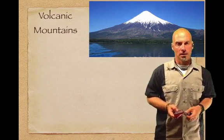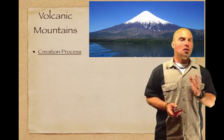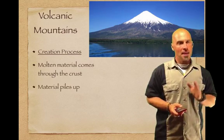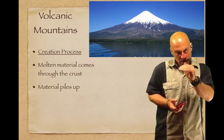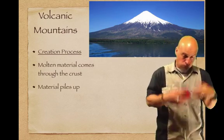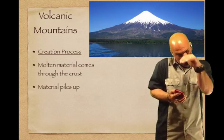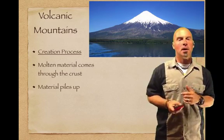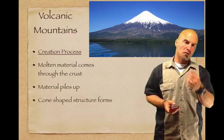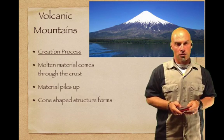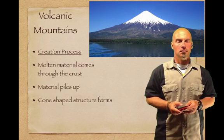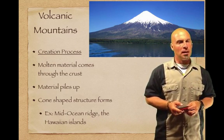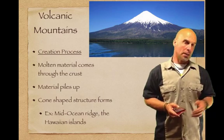Volcanic mountains — molten material comes through the crust and builds up gradually. It's not a big explosive eruption; it's a slow creeping out, bit by bit, getting bigger and bigger. The material piles up and forms a cone-shaped structure. Examples of volcanic mountains include the Mid-Ocean Ridge and the Hawaiian Islands.